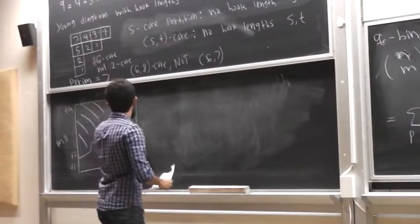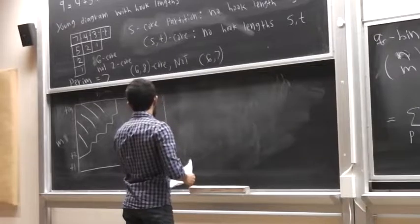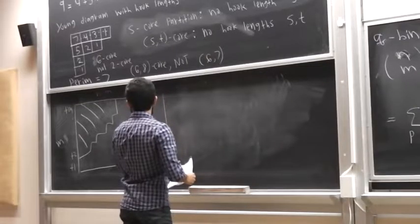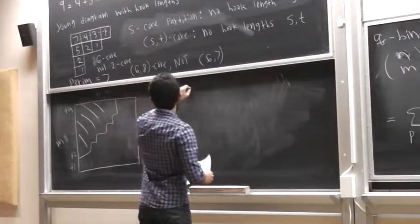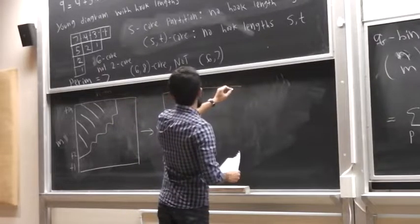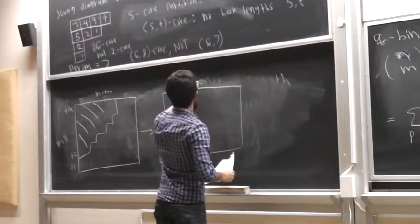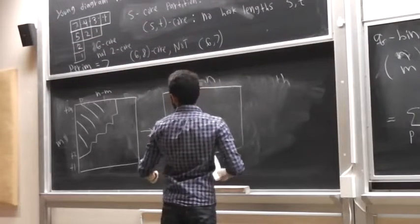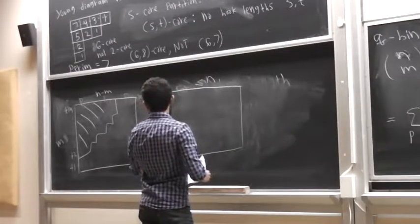So we do that to a partition like this. The new partition is going to have, this time, exactly m parts, and each of those is going to be size less than or equal to m. And now, not only will it have exactly m parts, those parts will be distinct.